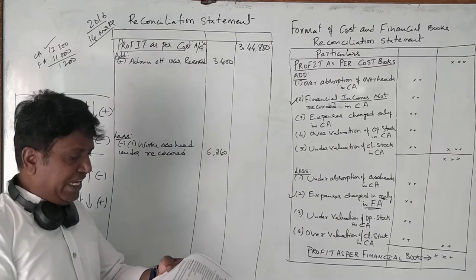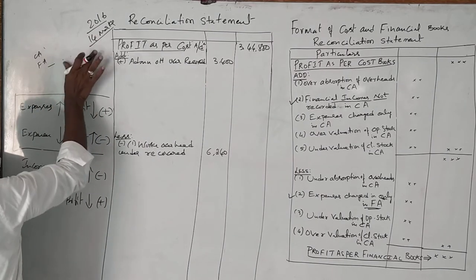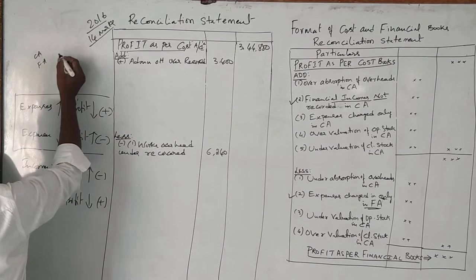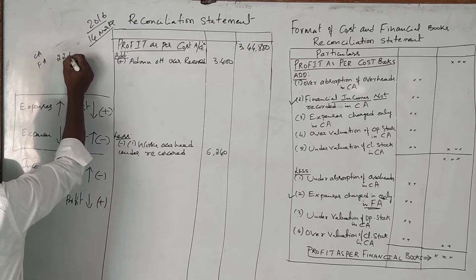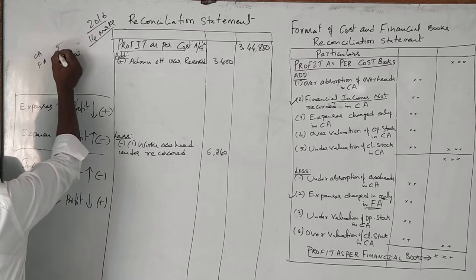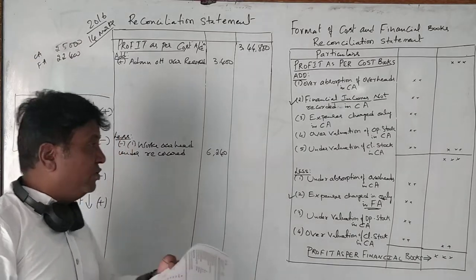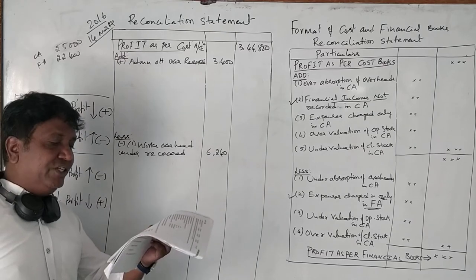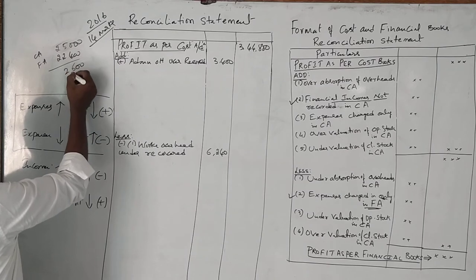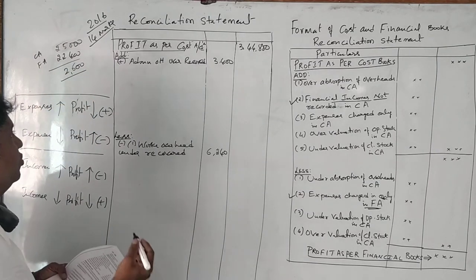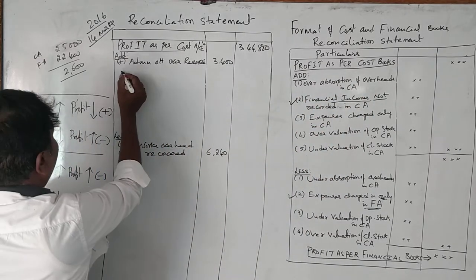Depreciation charged in financial accounting is 22,400 rupees, whereas cost accounting is showing 25,000 rupees. So depreciation as per FA is 22,400 and as per cost accounting is 25,000. In cost accounting we are showing 2,600 more. Any expenses over-absorbed or charged more should be taken here.